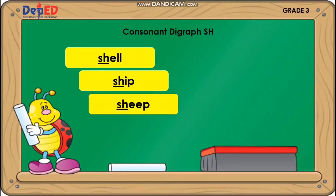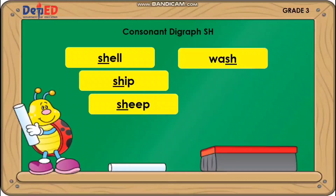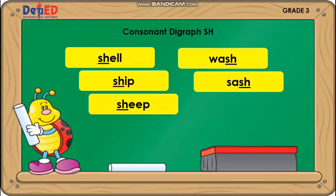The following are words that end with consonant digraph SH: Wash. Sash. Bash.